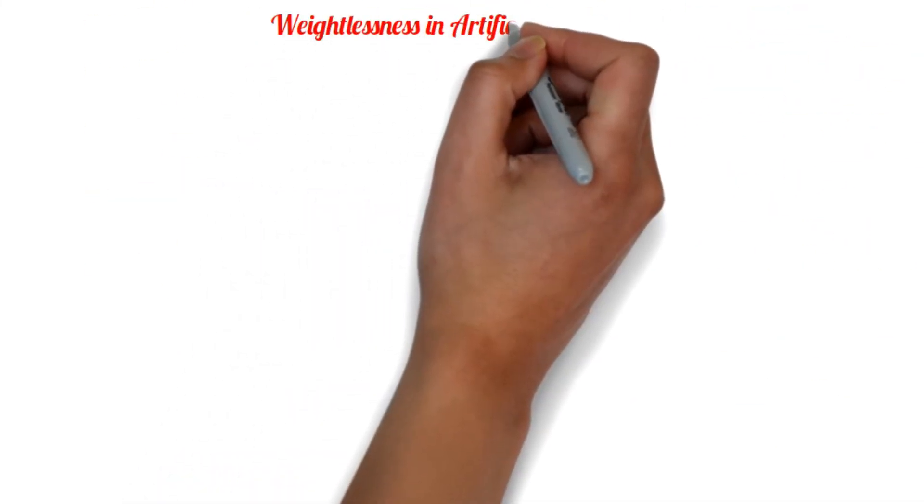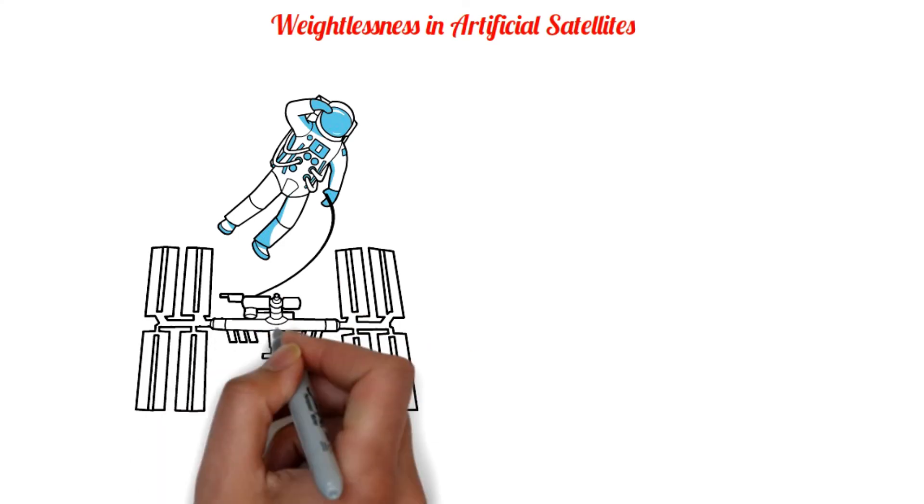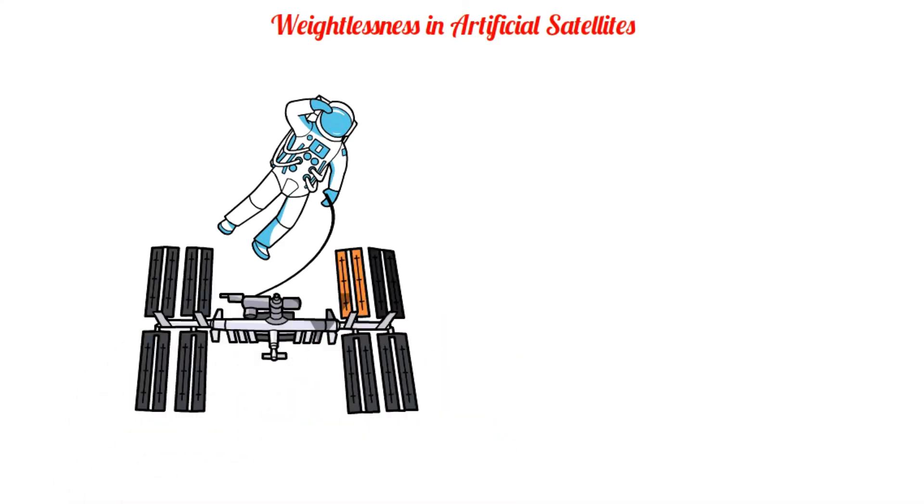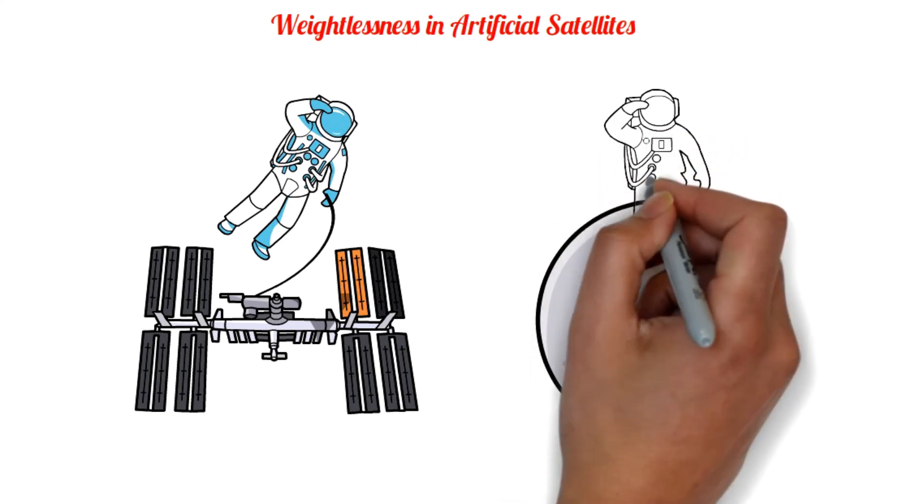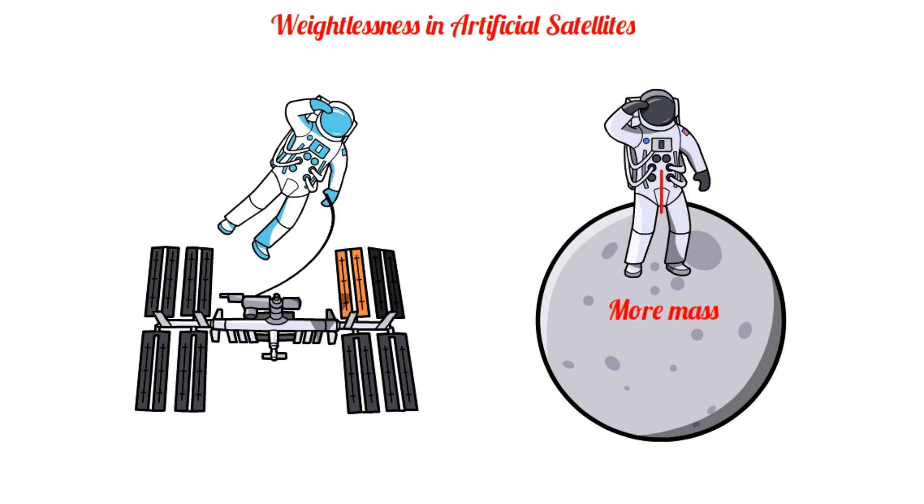Weightlessness in artificial satellites. Astronauts always feel weightless in an artificial satellite of Earth. But on a natural satellite like the moon, astronauts do not experience weightlessness, because the moon has more mass and exerts a gravitational force on them.